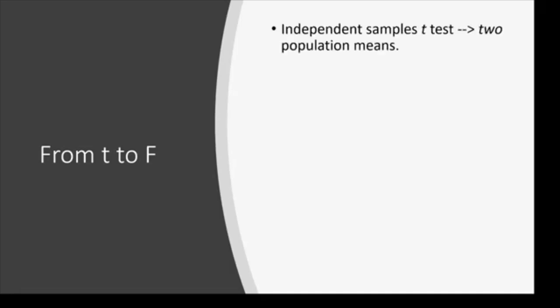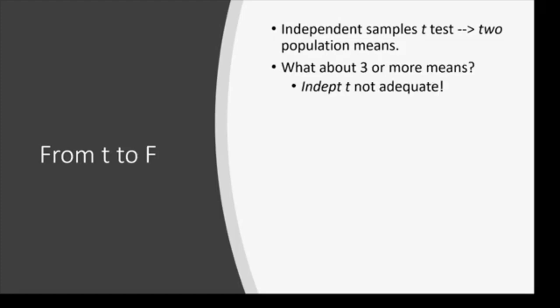I want to talk about what we were doing before and how that relates to what we're doing now. We were using the T distribution and had different kinds of T-tests. With independent sample T-tests, we were looking at two population means and seeing how they compared. But what happens when we have three or more means? The independent T is no longer adequate. If you have three or more groups in your data, you need to be running an ANOVA. If you have two groups, you can run an independent T — but three, five, or eight separate groups must be run as an ANOVA.